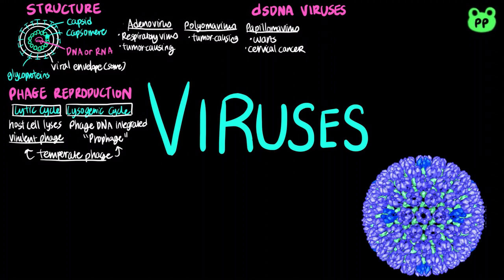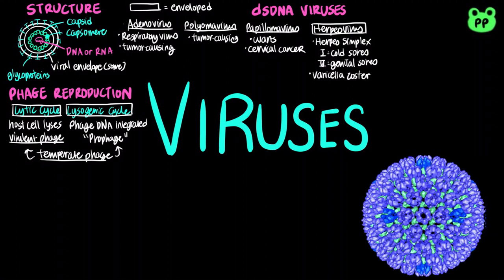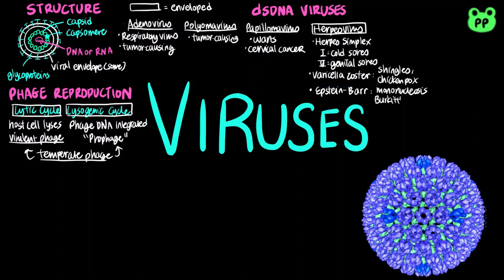Herpes virus contains viral envelopes, including type 1 herpes simplex virus, which causes cold sores; type 2 herpes simplex virus, which causes genital sores; varicella zoster virus, which causes chicken pox in children and shingles in adults; and Epstein-Barr virus, which causes mononucleosis, or glandular fever, and Burkitt's lymphoma, a cancer of the lymphatic system.